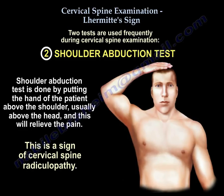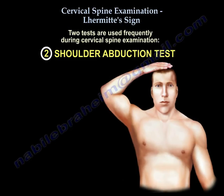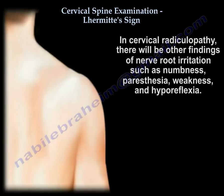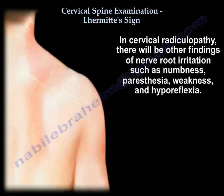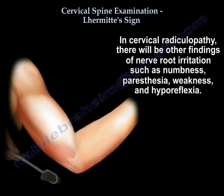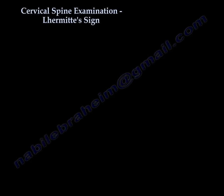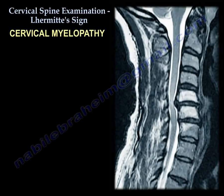This is a sign of cervical spine radiculopathy, and the shoulder abduction test differentiates spine pathology from shoulder pathology. In cervical radiculopathy, there will be other findings of nerve root irritation such as numbness, paresthesia, weakness, and hyporeflexia.